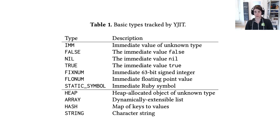These are the basic types currently tracked by YJIT, and they roughly correspond to Ruby value types. We have immediates such as false, nil, true, fixed-point numbers, floating-point numbers, and symbols, and heap objects such as array, hash, and strings.